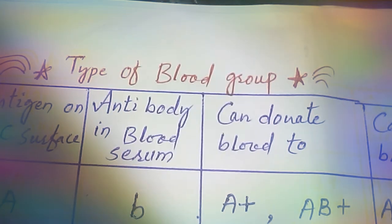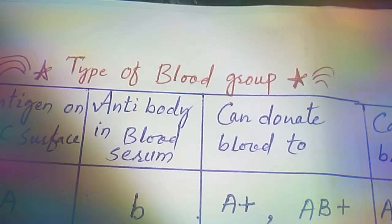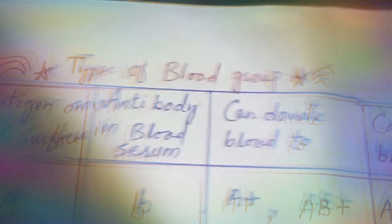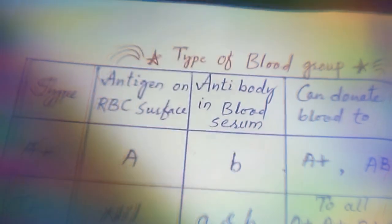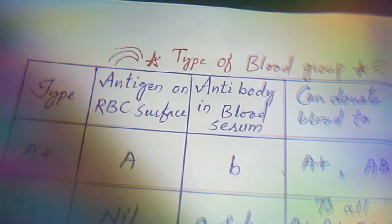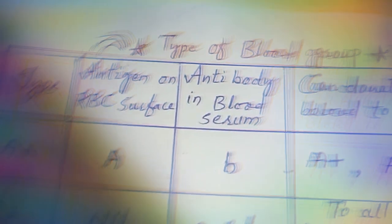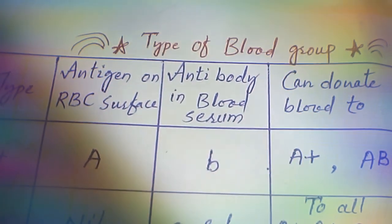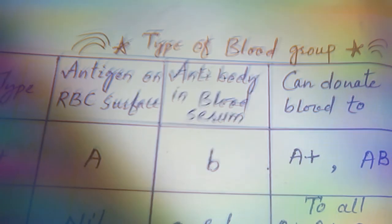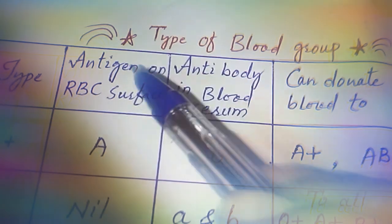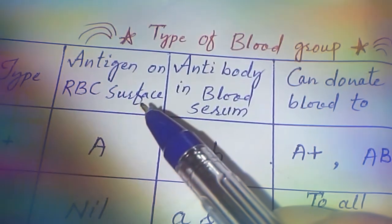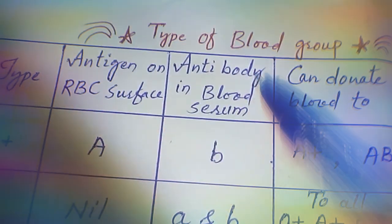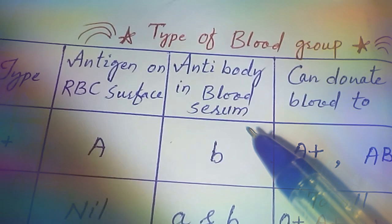There are four types of blood groups in human beings: blood group A, blood group B, blood group AB, and blood group O. All four types of blood group are decided by the presence of antigens on the surface of the RBC and antibodies in the blood serum.